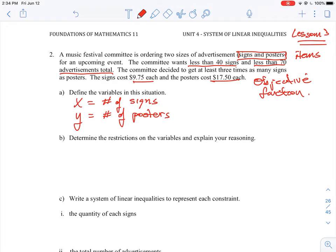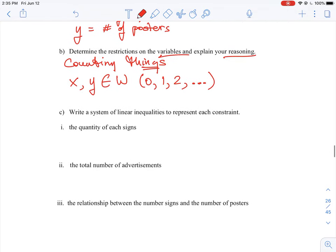Determine the restrictions on the variables and explain your reasoning. So again, we are counting things. Counting things means that we have to have a physical value that we can actually count. So this means x and y are just going to be elements of whole numbers. The lowest sign and poster count we can have is 0, 1, 2, 3, and so on. We can't have negative numbers. Or we can define it as integers with the restriction that x and y must be greater than 0, but whole numbers is just a little bit easier and more concisely easier to define.